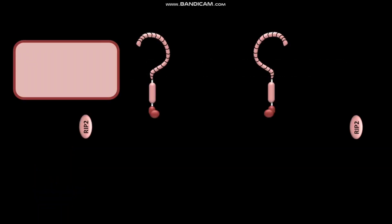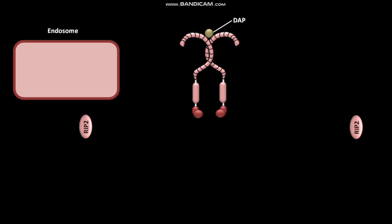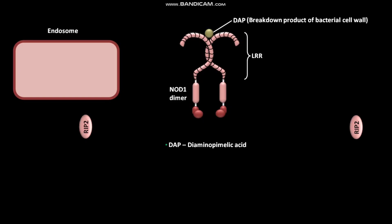First of all, NOD1 associates with endosomes. NOD1 is a cytosolic NLR. In the endosomes, NOD1 binds DAP as a dimer. DAP binds to the LRR regions of NOD1 — this is the NOD1 dimer. DAP stands for Diamino Pimelic Acid, and it is a breakdown product of bacterial cell wall.